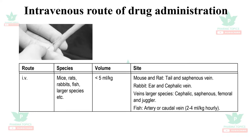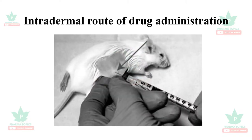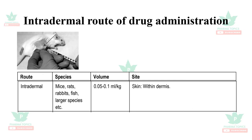The intradermal route of drug administration: the volume administered is very small — 0.05 to 0.1 ml per kg — in mice, rats, rabbits, fishes, and larger species. The drug is administered into the dermis layer of the skin.